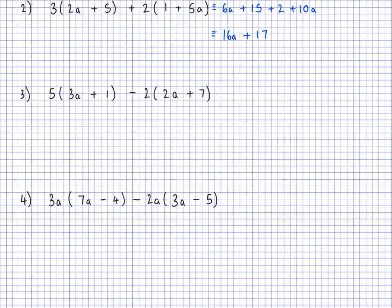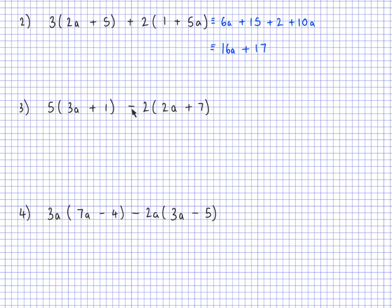The next example has a subtraction in the middle. I'm going to treat the second bracket as negative 2 multiplied to each term inside. The first bracket: 5 times 3a is 15a, and 5 times 1 is plus 5. Then negative 2 times 2a is negative 4a, and negative 2 times 7 is negative 14 — notice negative times positive gives a negative answer. Collecting like terms: 15a takeaway 4a is 11a, and plus 5 takeaway 14 is negative 9.